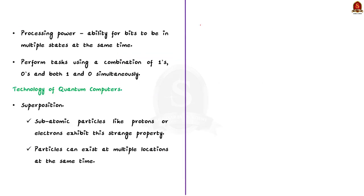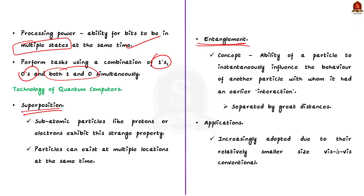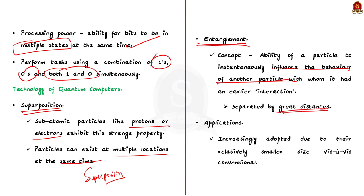Quantum computers gain much of their processing power through the ability of bits to be in multiple states at the same time — performing tasks using combinations of ones, zeros, and both simultaneously. They use the concepts of superposition and entanglement. Superposition means subatomic particles can exist at multiple locations at the same time. Entanglement is the ability of a particle to instantaneously influence the behavior of another particle with which it had an earlier interaction, even when separated by great distances.